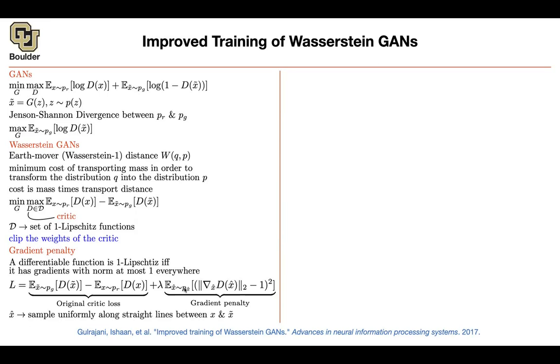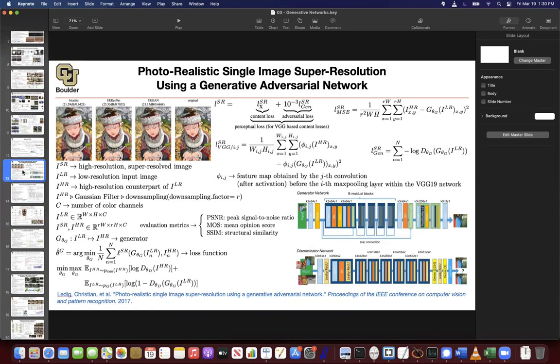Student: I understand each individual loss function, but I'm confused how they're pieced together. We have this first loss function LSR, but how does the regular GAN loss function fit in? Instructor: This GAN loss function here is going to help you train D. Once you know D, you're going to be able to train G, and that's this loss function. The LSR-GAN is exactly what you have up there as well.